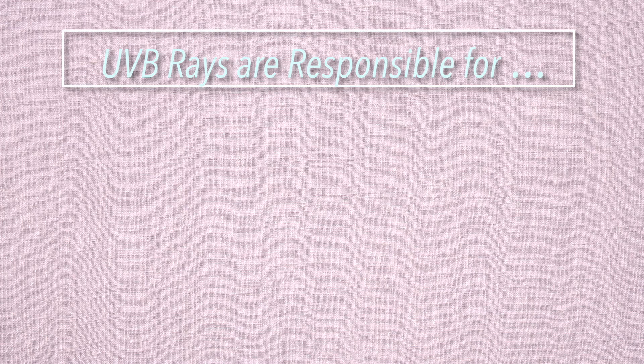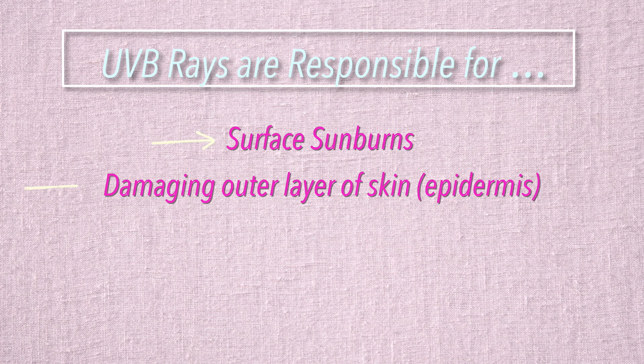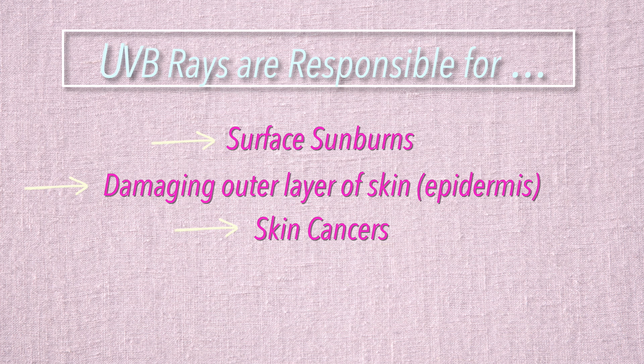Now let's go over UVB and UVA. Both of these are invisible to the natural eye but they are ultraviolet rays emitted from the sun. UVB rays are the rays that cause sunburns on the skin and they generally affect the epidermis, which is the top layer of the skin. UVB is also the main cause for most forms of skin cancer, which is why UVB rays can be so dangerous.